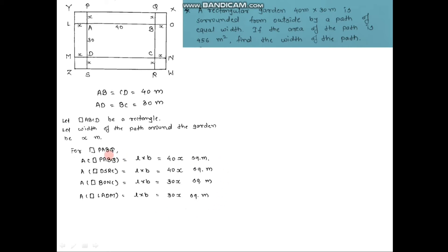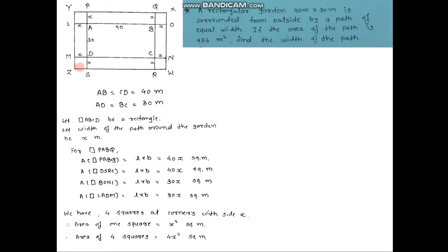So we have the areas of all four quadrilaterals. For this rectangular path, we also have four squares at the four corners, each with side x meter. The area of one square = x² square meters. Therefore, the total area of four such squares = 4x² square meters.